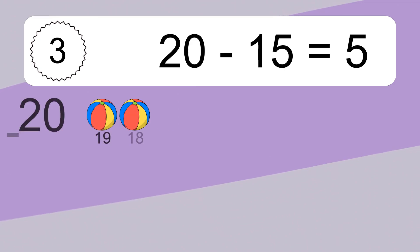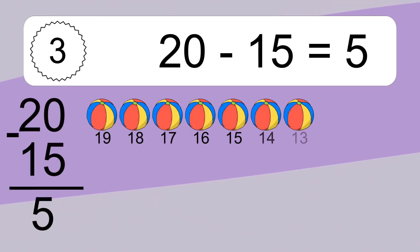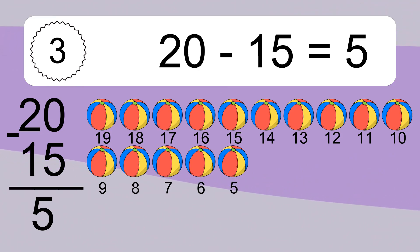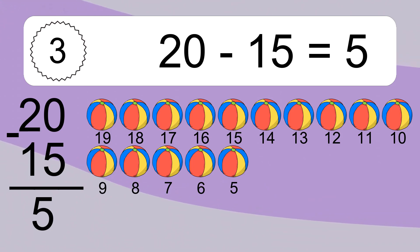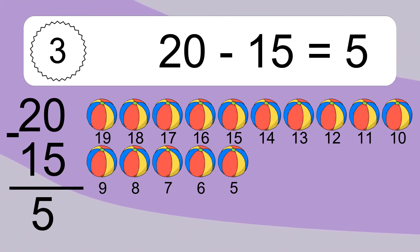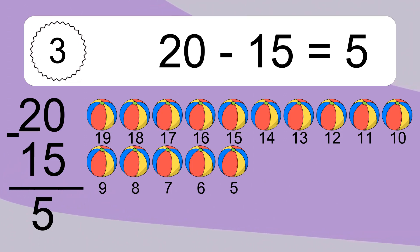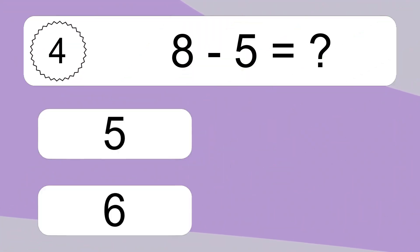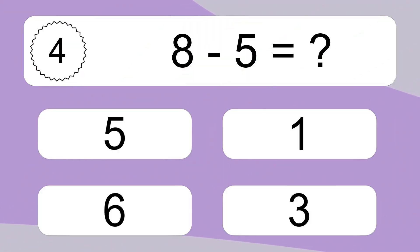20 minus 15 equals what? 20 minus 15 equals 5. Let's count it: 19, 18, 17, 16, 15, 14, 13, 12, 11, 10, 9, 8, 7, 6, 5.